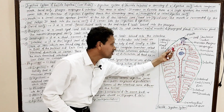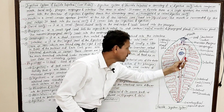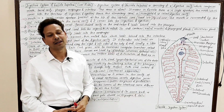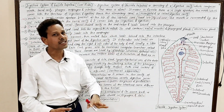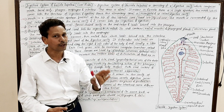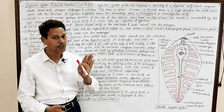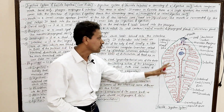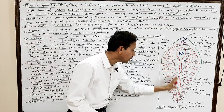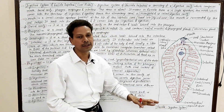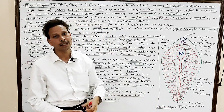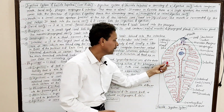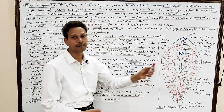Digestion strictly takes place in the intestinal caeca. In the case of liver fluke, digestion is extracellular and occurs in the lumen — the cavity — of the intestinal caeca.